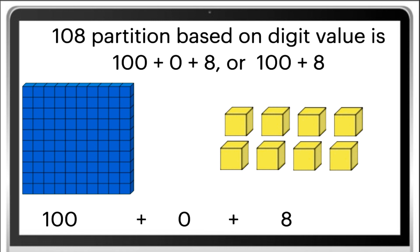108 partition based on digit value is one hundred plus zero plus eight, or one hundred plus eight. That is: one hundred plus zero plus eight.